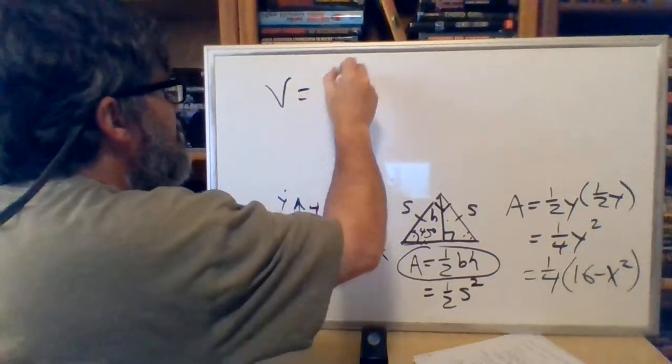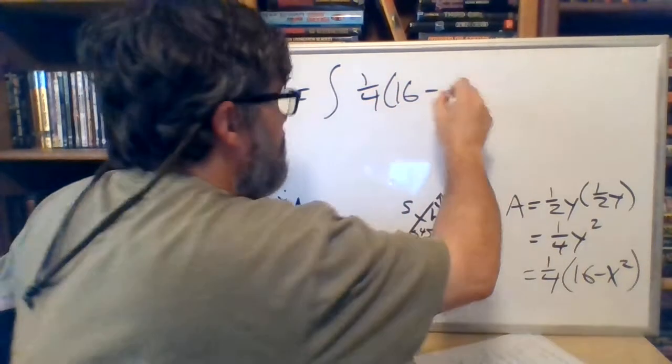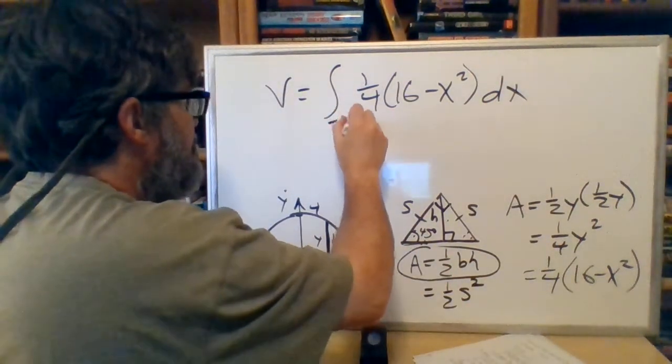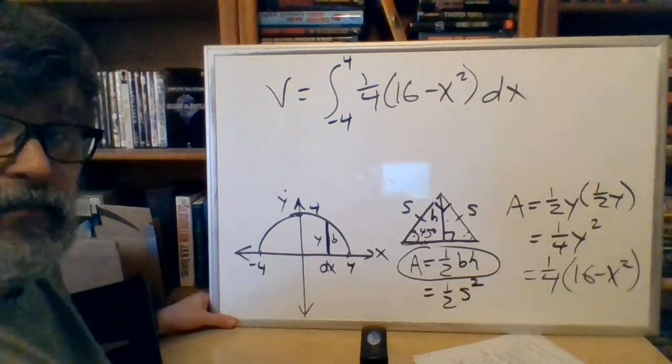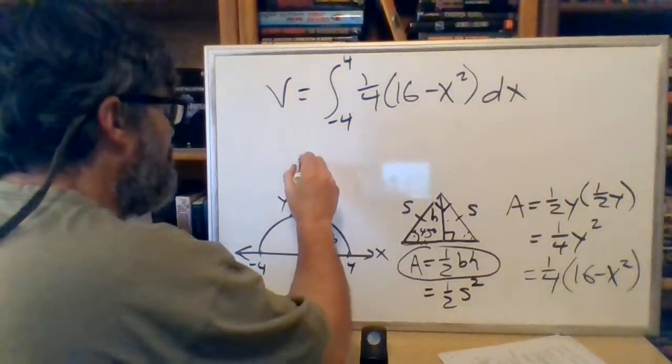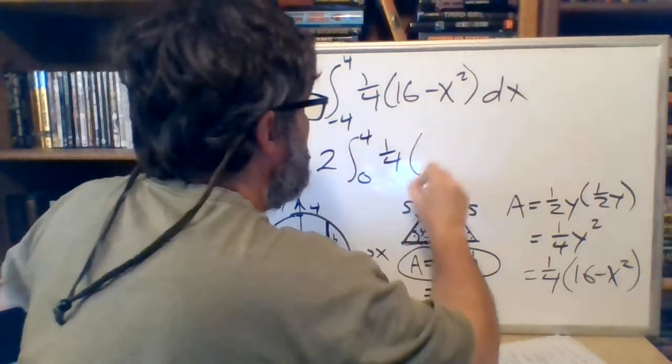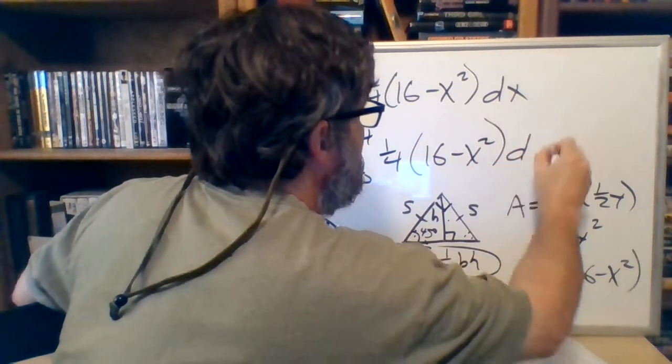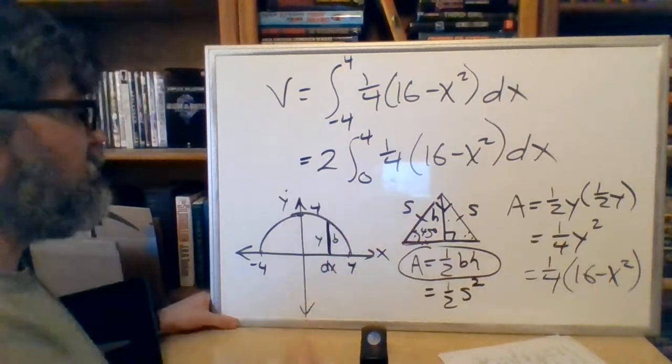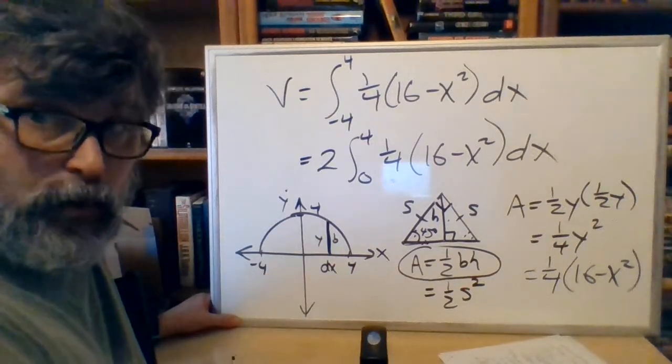And I can get the volume equals the integral of that one-fourth 16 minus x squared dx from, in this case, negative four to four. Simple enough? Well, actually, I can make it even easier to do. Watch this. What if I said, two integral from zero to four, one-fourth 16 minus x squared dx? Well, what did I do? How did that negative four become a zero in that lower boundary, and where'd that two come from?